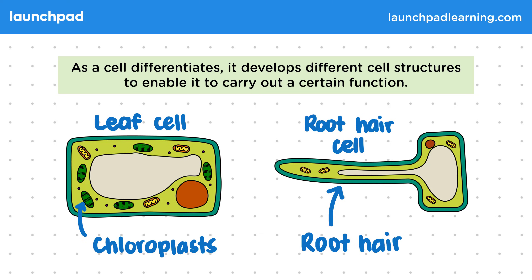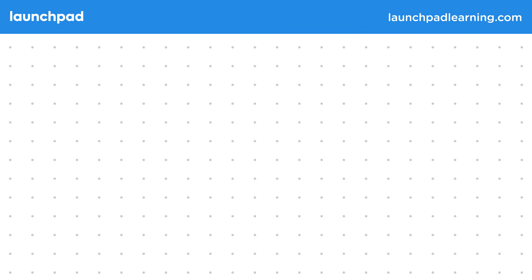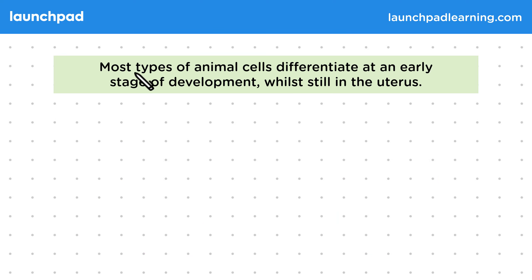Both of these cell types develop from the early cells in seeds. So when does cell differentiation occur in animal development?